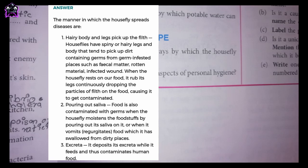2. Pouring out saliva. Food is also contaminated with germs when the housefly moistens the foodstuffs by pouring out its saliva on it, or when it vomits or regurgitates food which it has swallowed from dirty places. 3. Excreta. It deposits its excreta while it feeds and thus contaminates human food.